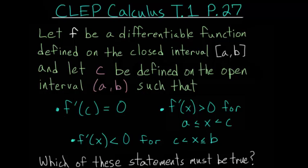For problem 27, let f be a differentiable function defined on the closed interval from a to b, and let c be defined on the open interval from a to b, such that the derivative evaluated at point c is equal to 0, the derivative is positive for x values between a and c, and the derivative is negative for x values between c and b. Which of the following statements must be true?